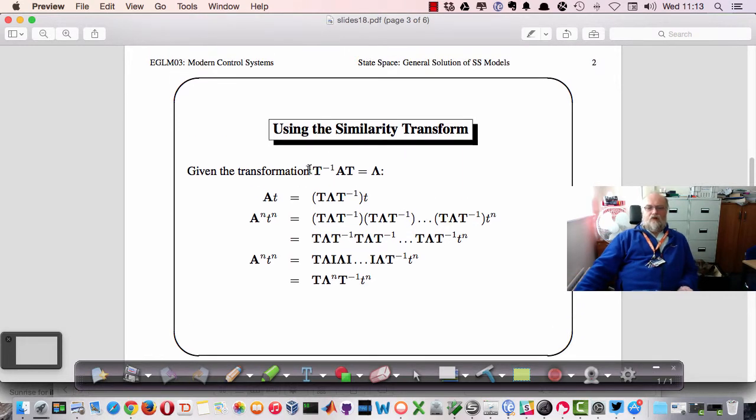Given the transformation that we started last week, we showed that if we take a transformation matrix which is equal to the eigenvectors of the A matrix, then this transformation matrix T inverse A T will produce the lambda function which is of course a diagonal matrix. So if we say A of t is equal to T lambda T inverse of t, which is the inverse of this equation, then we can compute successive powers of n by raising the power of this expression by multiplying over and over again by T lambda T inverse.